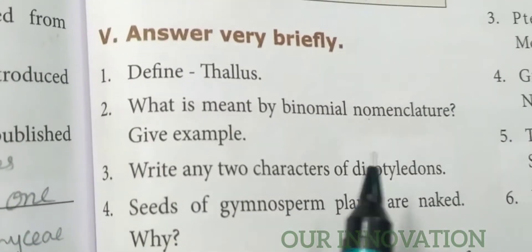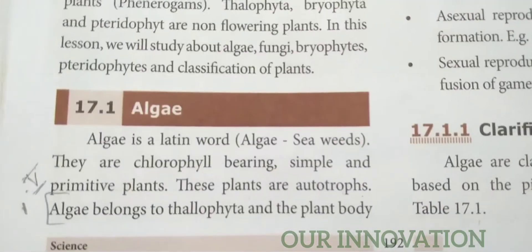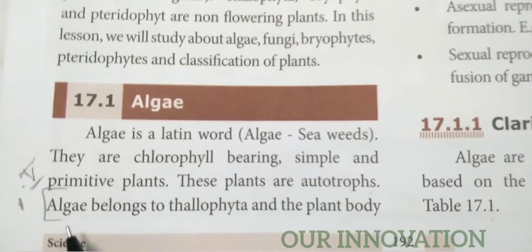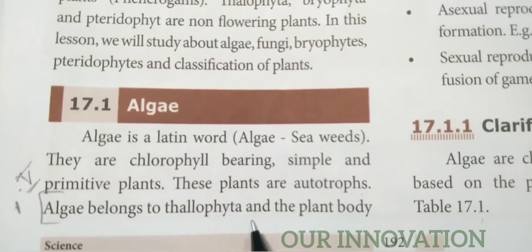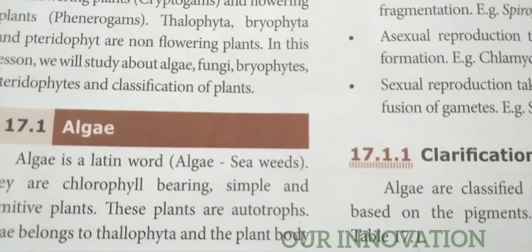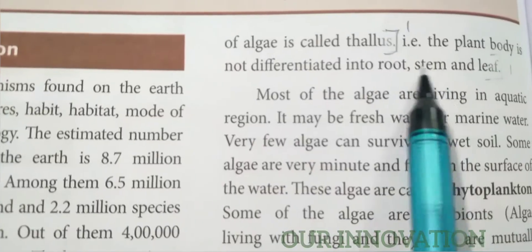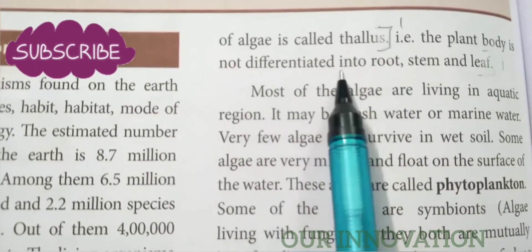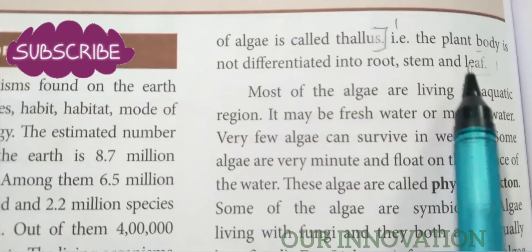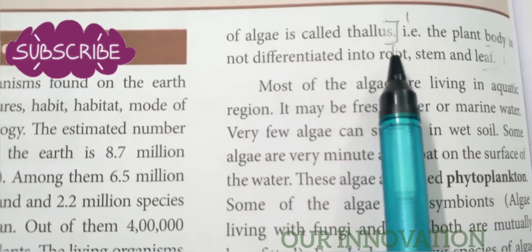Very brief answers. Define thallus. Page number 192. Algae belongs to Thallophyta and the plant body of algae is called thallus. The plant body is not differentiated into root, stem, and leaf — that is called a thallus.